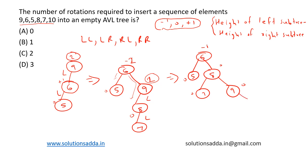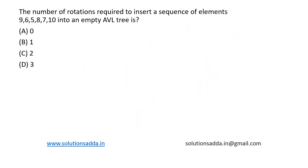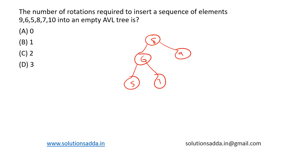Now we are inserting 10. Upon inserting 10, the balance factor of node 6 becomes 1 minus 3, that is minus 2. The balance factor of node 8 becomes 1 minus 2, that is minus 1. The balance factor of node 9 becomes 0 minus 1, that is minus 1. This is an RR imbalance, so we rotate again and get the final tree: 8 at the root, 6 to the left with 5 and 7 as children, and 9 to the right with 10 as its right child.